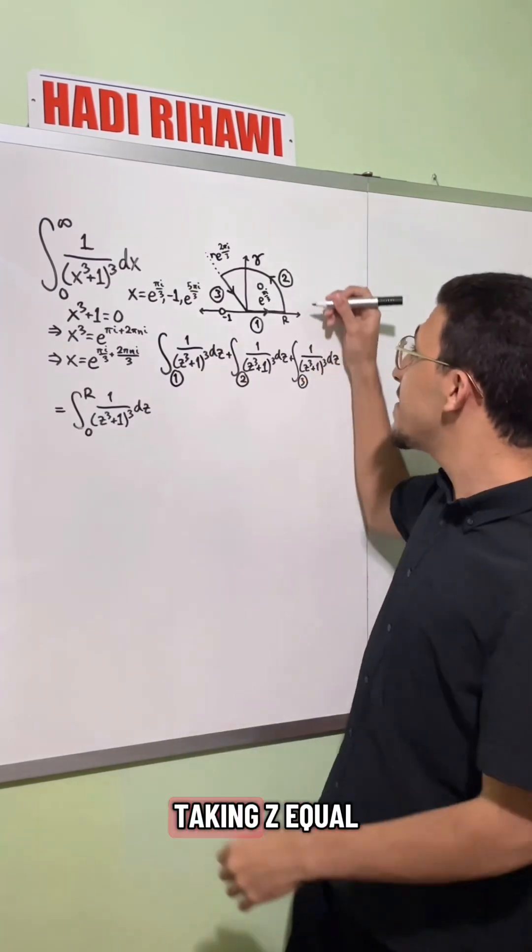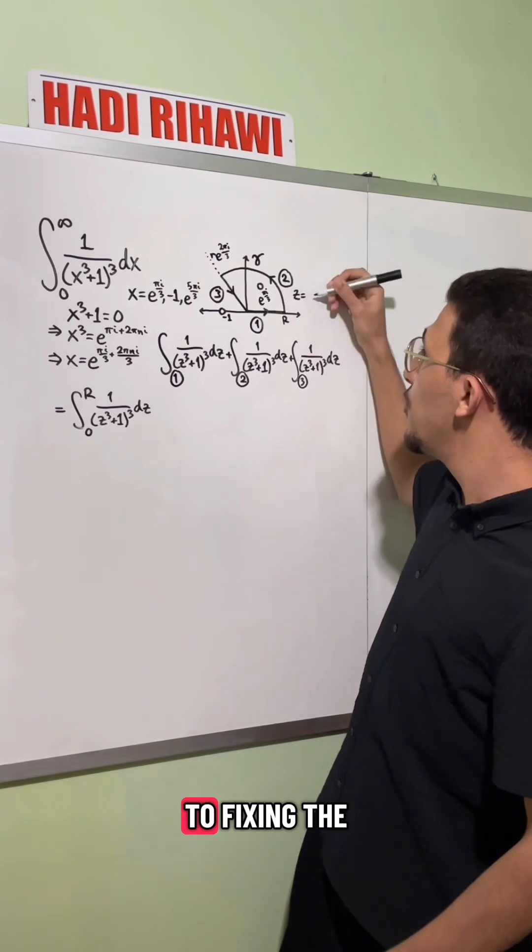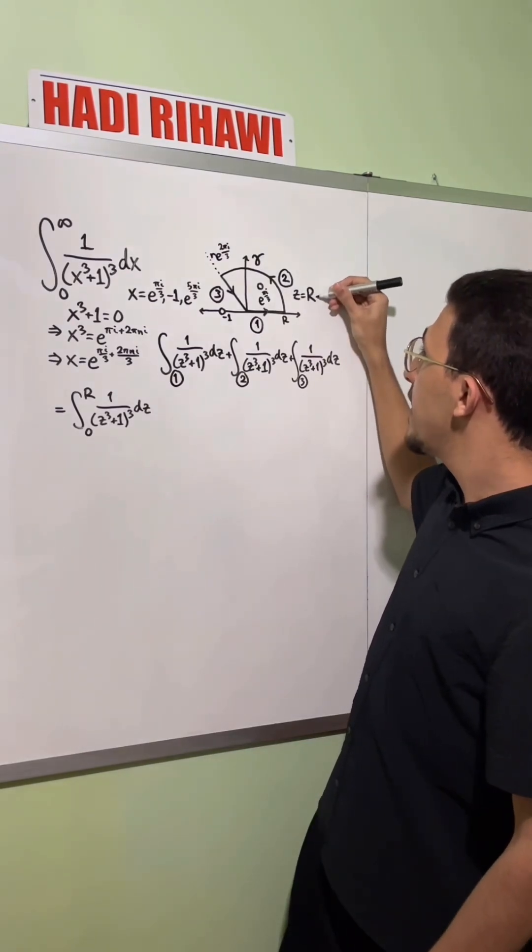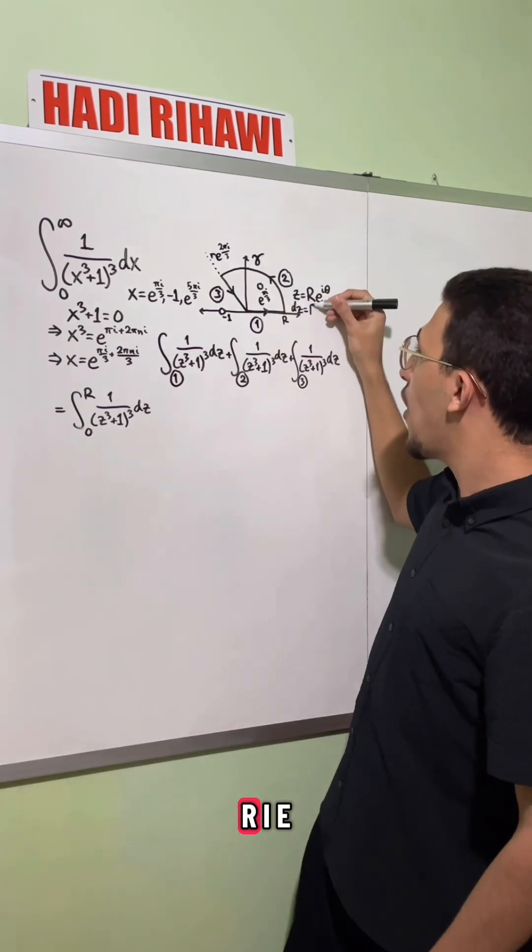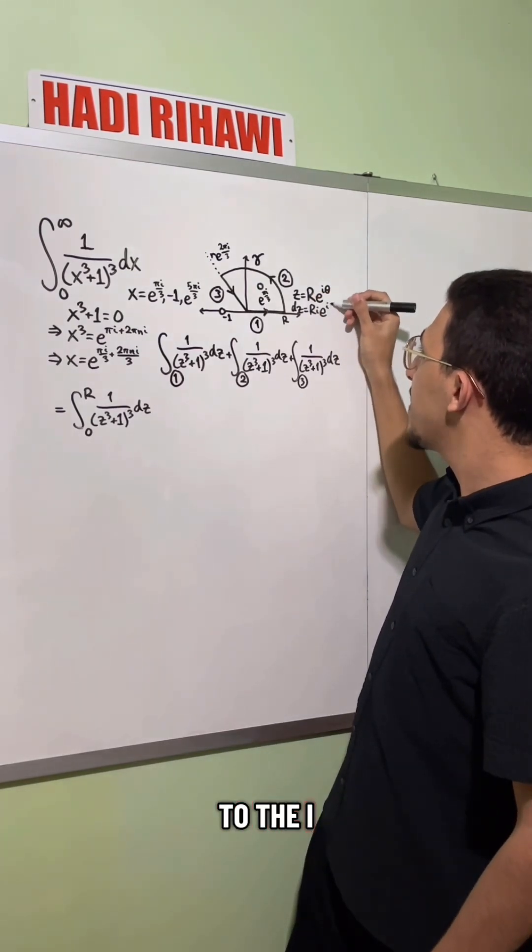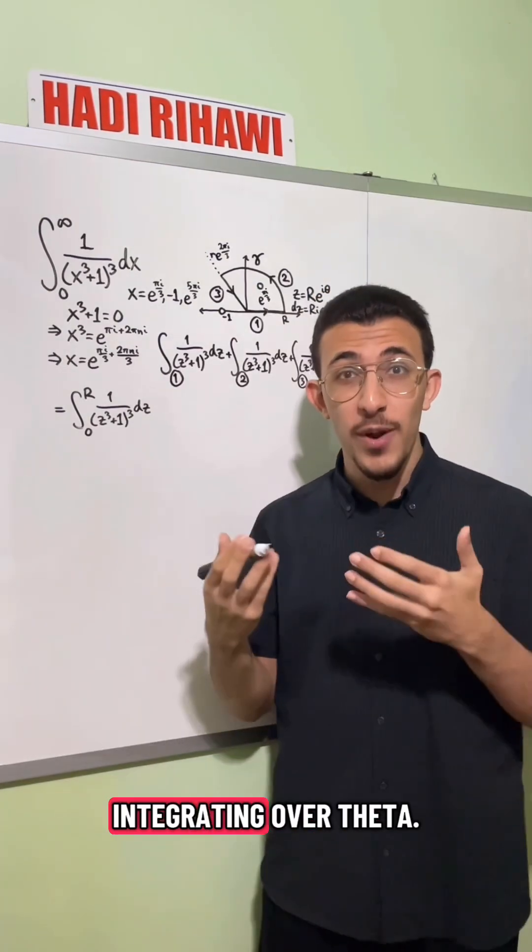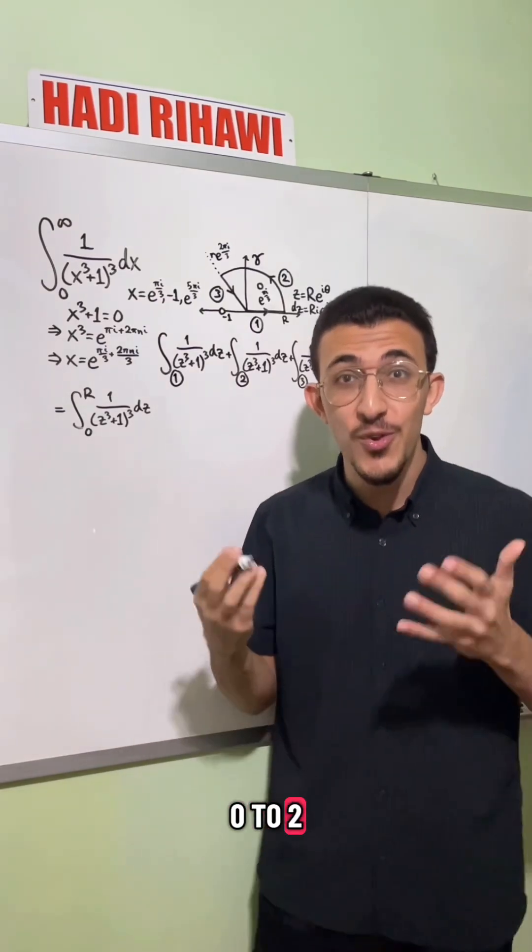On the second part, we're actually taking z equal to, fixing the radius r, and we're changing the angle, which means that dz equals r i e to the i theta d theta. So now we're integrating over theta. We're going from zero to two pi over three.